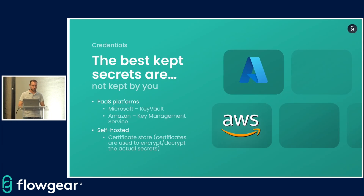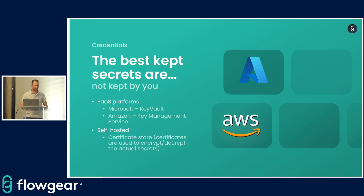As to where we actually store this data, in Flowgear we use Microsoft Key Vault, which is considered best practice for Azure. If you're using AWS, they have an equivalent store. Key Vault is a purpose-built service that allows you to store things like tokens, keys, and certificates, and has extremely granular access control around which identities, users, or services are able to read and write those resources, with a full auditable record of those actions. Because this is a sensitive data hotspot, we can give customers on our Pro and Enterprise plans direct access to that Key Vault so they can add additional policy and lock it down further.